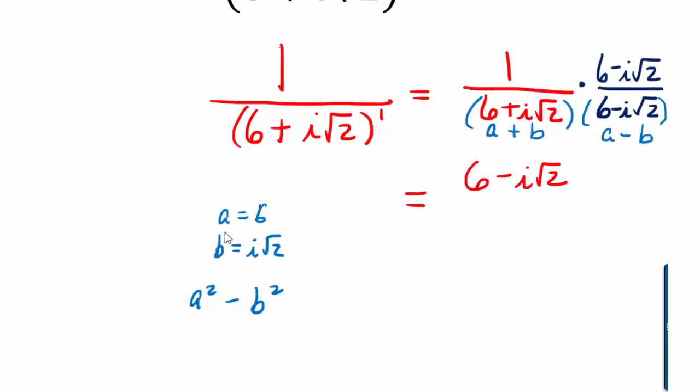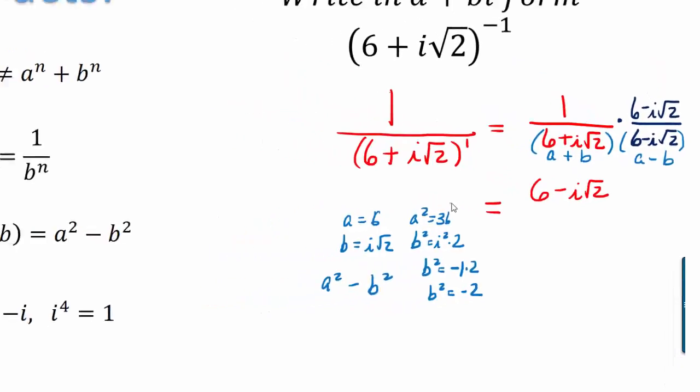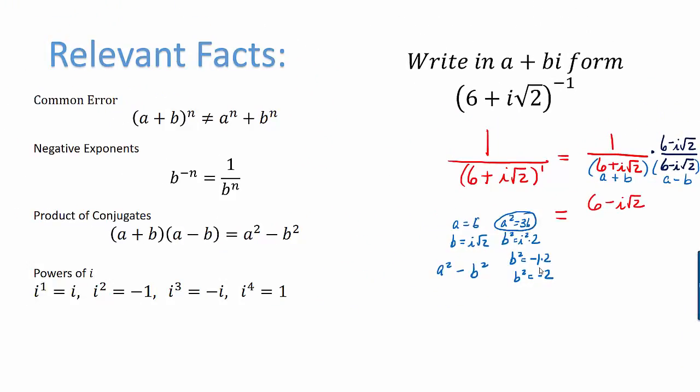So we just need to figure out what a squared is and what b squared is. a squared is 36. b squared is going to be i squared times the square root of 2 squared or 2. Or in other words, b squared is just negative 1 times 2. So b squared is negative 2. So using the fact that the denominator will equal a squared minus b squared, we will write 36 minus negative 2.